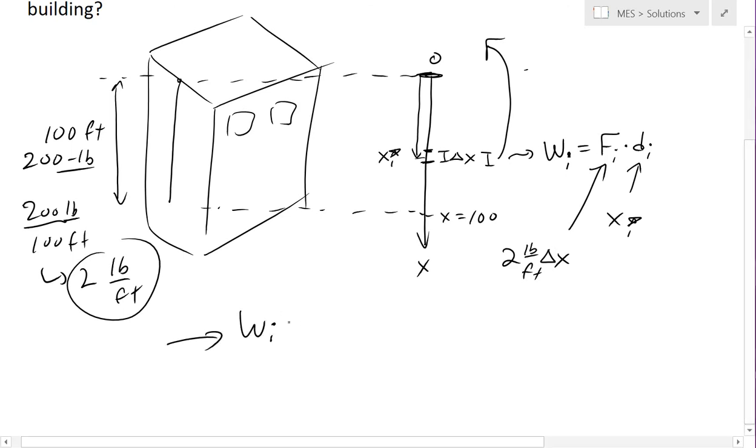So when we put this together, we know that wi, or this segment right there, is going to be, the work required to put on top of the building is going to be now two delta x times it by xi, and xi star, which is the point inside this.